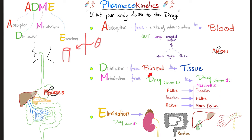Distribution means taking the drug from the blood to the tissue. Absorption took me to the blood; distribution will take me from the blood to the tissue — any cell in your body. A tissue is a bunch of cells gathered together.